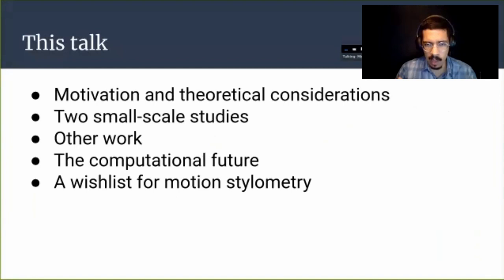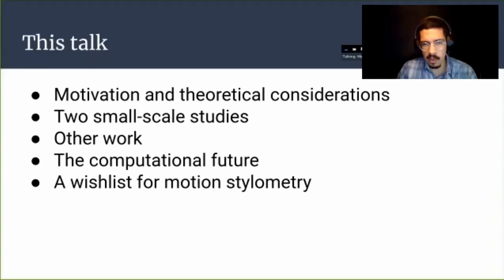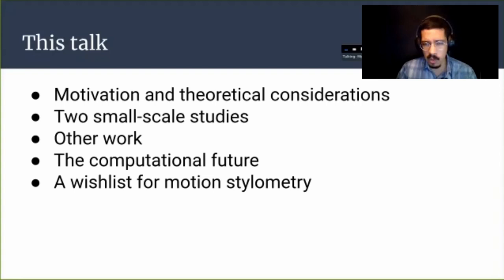I want to begin by explaining some of the motivations and theoretical considerations for why we need a stylometry of motion in the first place. I will describe two small-scale studies that I've done with my collaborators, who are people who work in science and engineering fields. I'll refer to other work, and then I'll spend a bit of time describing the computational future. I'll end by sharing a wishlist for motion stylometry, and I hope to have a conversation afterwards about how we can learn from the stylometry of text and explore the differences and similarities.